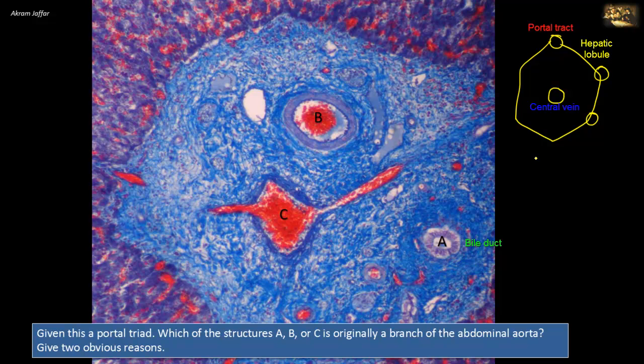Remember, the liver has a dual blood supply from the portal vein and from the hepatic artery. The portal vein brings blood that contains the products of digestion, while the hepatic artery brings blood that is rich in oxygen. The hepatic artery is a branch of the celiac trunk, which is a branch of the abdominal aorta.